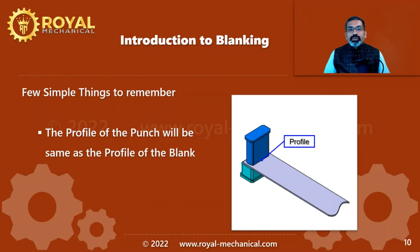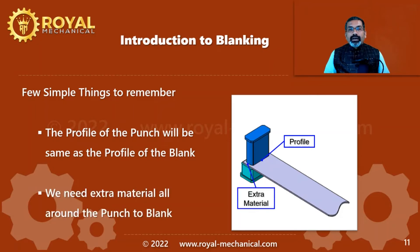You might have observed that the profile of the blank will be the same as the profile of the punch and the die. For example, if you want the blank to be in a circular shape, the shape of the punch and the die opening will be circular. Also, we need some extra material all around the punch for the shearing or the blanking to happen.